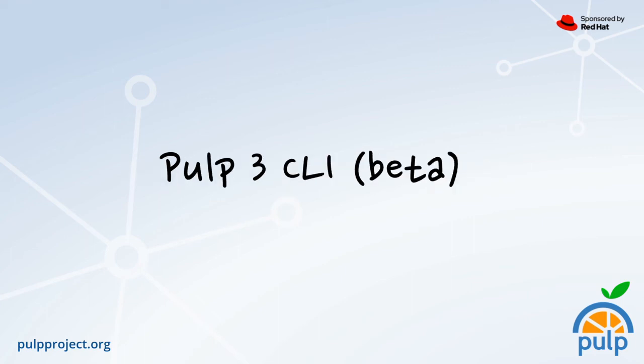PULP 3 was released without a CLI or a web UI, which had a very real impact on its usability. Now the first beta release of the PULP 3 CLI is available. The further development of the PULP 3 CLI will have a positive impact on the overall usability of PULP 3.